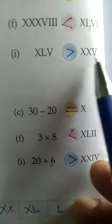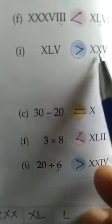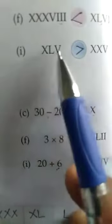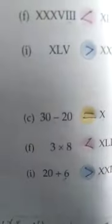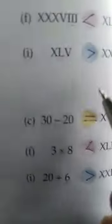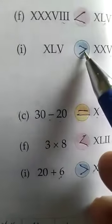Now QI: XLV and XXXV. XLV has 45 and XXXV is 25. So 45 is greater than 25, so this sign you will write here.